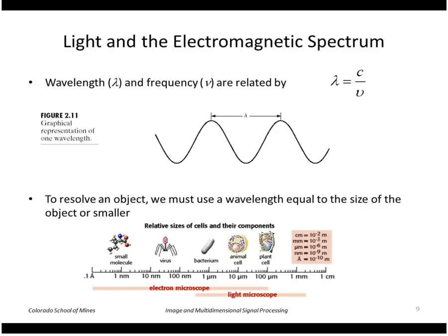Another factor influencing the size of objects we can see is the wavelength of light. Remember that the wavelength of light is related to the frequency through the speed of light using this equation here. Through the principles of optics, we know that we have to use a wavelength equal to the size of the object or smaller if we want to see the object. So with standard light microscope methods we could see an object down to the size of a bacteria, about one micrometer or smaller. But to go down to a virus or lower, we need a smaller wavelength such as that you could get with an electron microscope.